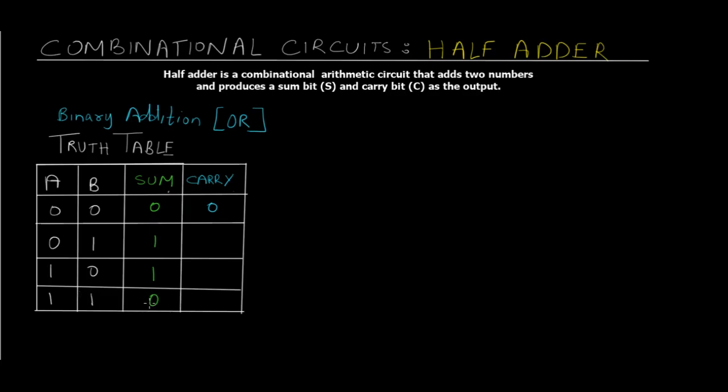This is the scenario: 1 plus 1 is going to give us 0 and this 1 gets carried. This is why we have a sum column as well as a carry column. In all other cases the carry is 0. This is the binary addition truth table and this is what we're going to create using a half adder.